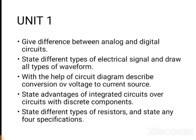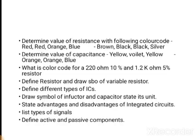Fifth, state different types of resistors and state any four specifications. In this question you have to state all types of resistors — that is fixed value and variable value resistors — and state any four specifications. Next, you may be given the color code of a resistor and you have to find out the value of resistance.